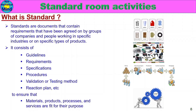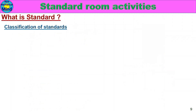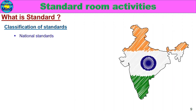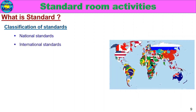Classification of Standards. There are two classifications. First, National Standards — standards prepared within a country. Second, International Standards — standards that all countries can follow. Any standard will fall into one of these two classifications.